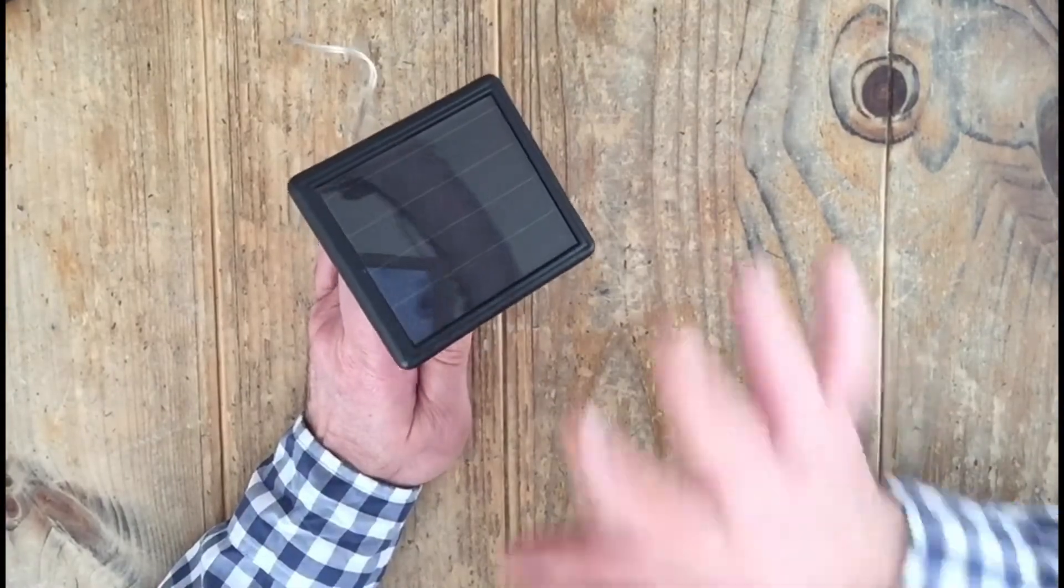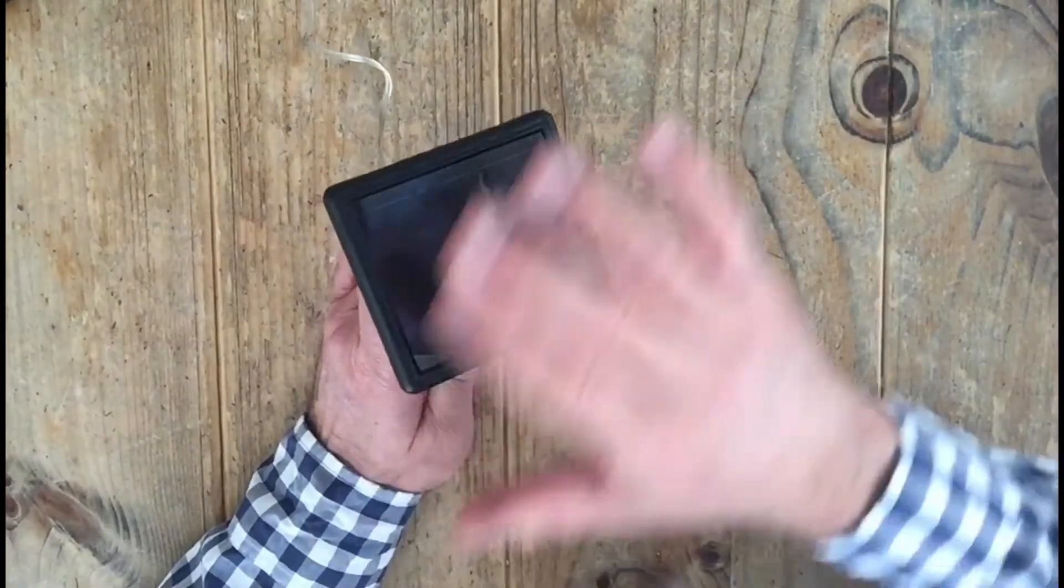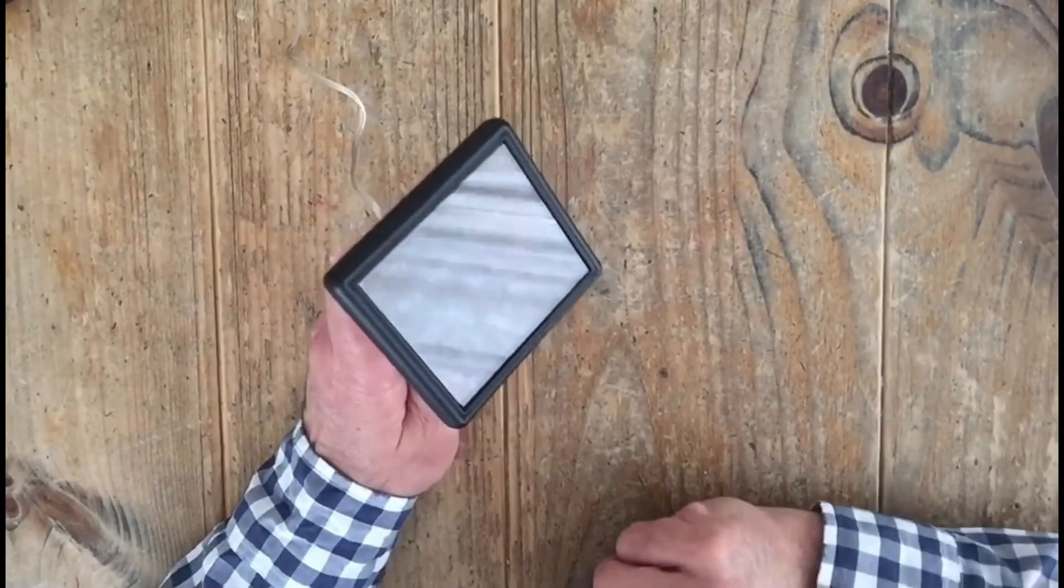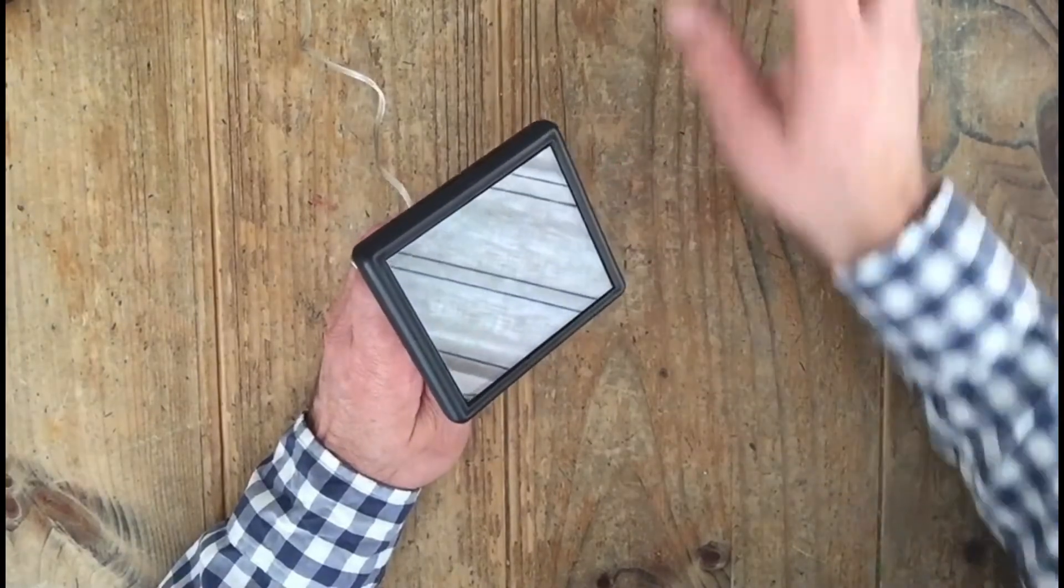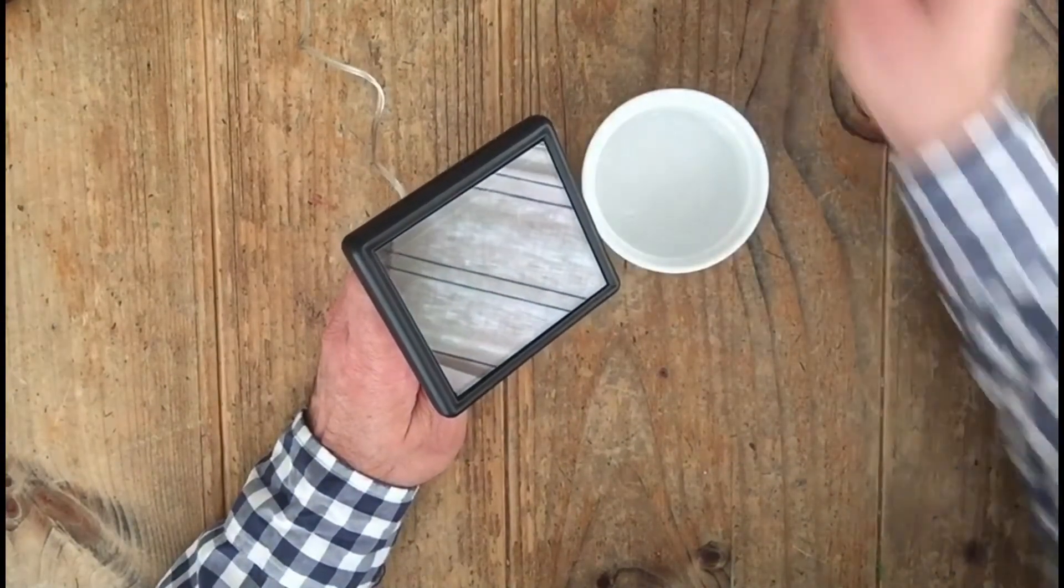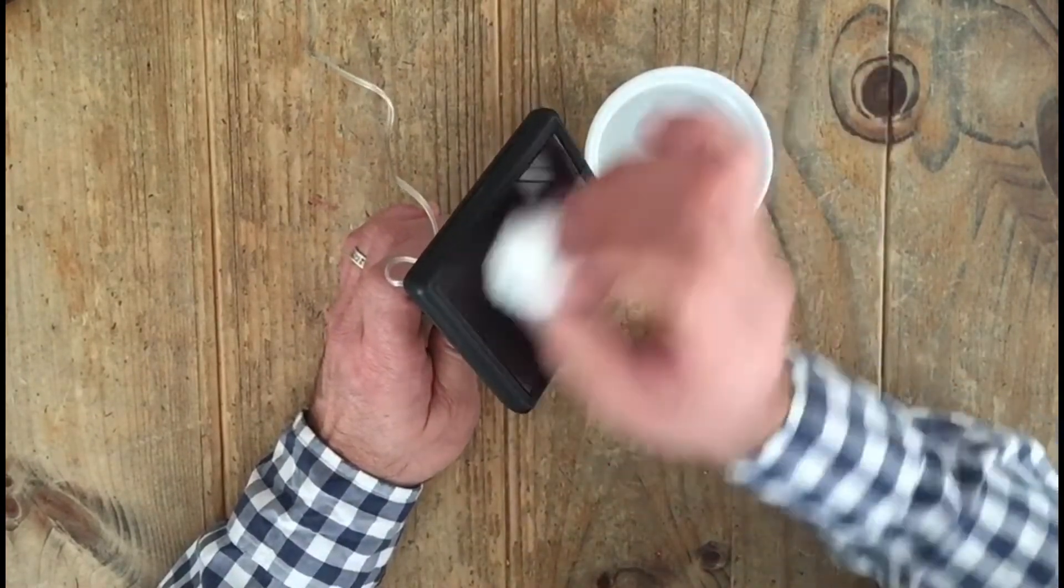This will get dirty and dusty as it will be outdoors, and that will affect not only the photocell but also the ability for the solar panel to charge the battery. So wipe this off occasionally for some additional cleaning. You can use equal parts vinegar and water and a cotton ball and wipe this off.